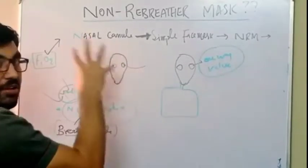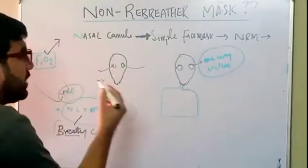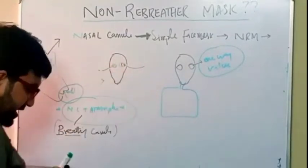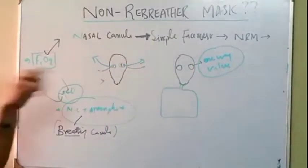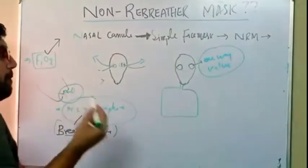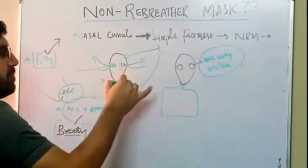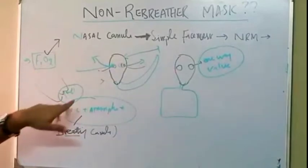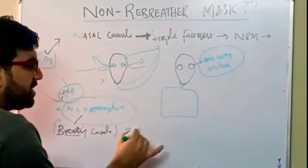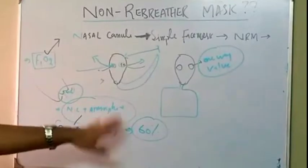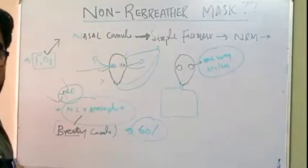With nasal cannula you have low FiO2. If you proceed toward the simple mask, there are two pores on the sides of the simple surgical face mask — the mask we commonly use in our ward. Air can come through these pores and air also exits through these pores. So again there are two sources: one is the atmosphere and the other is the oxygen piped source. The FiO2 is increased a little bit because interference from the environment is decreased, up to 40 to 60 percent.